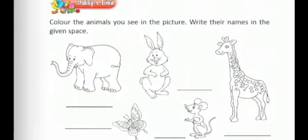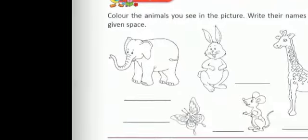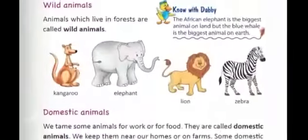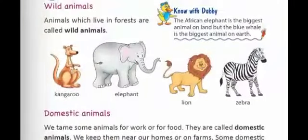Here is Dabby's time. Colour the animals you see in the picture and write their names in the given space. Before colouring, you need to stick the pictures of these animals or draw the pictures of these animals and colour them. Now, let us see what are the different kinds of animals.